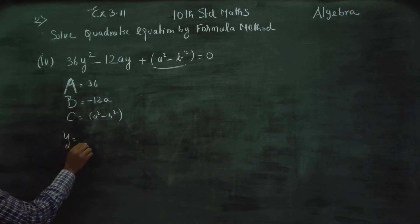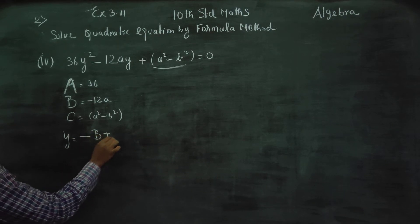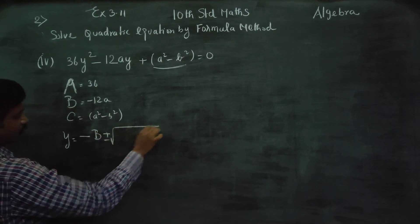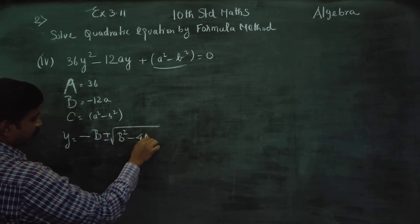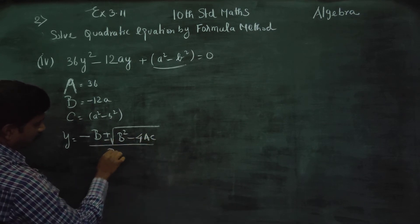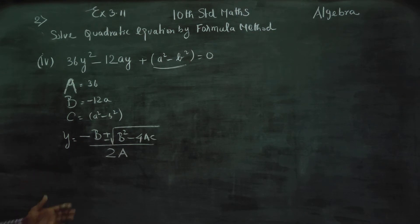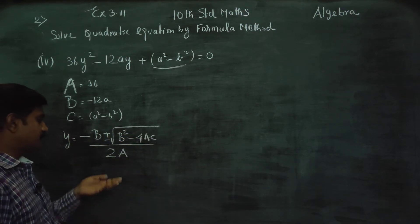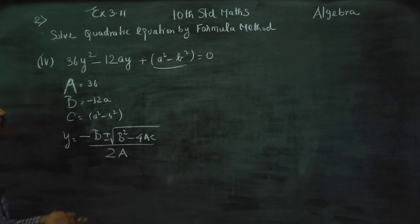Y is equal to: minus B plus or minus square root of B squared minus 4AC, divided by 2A. This is the formula for Y.